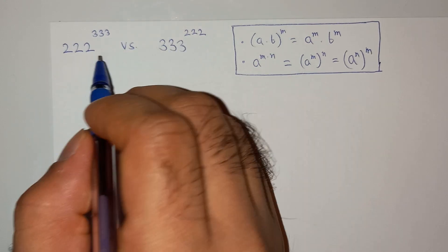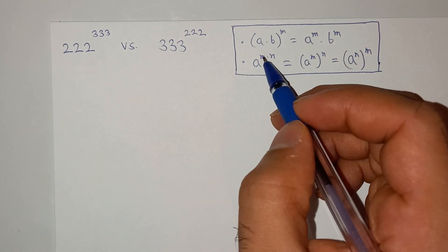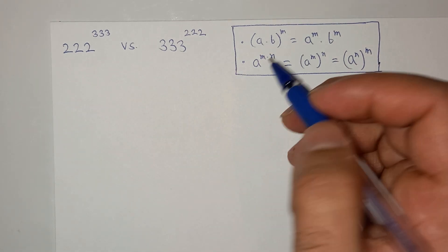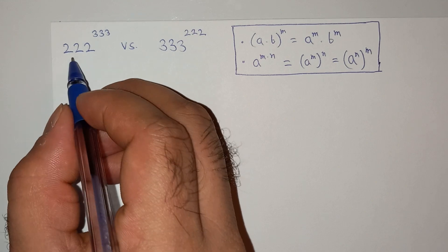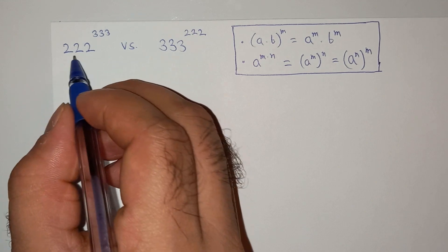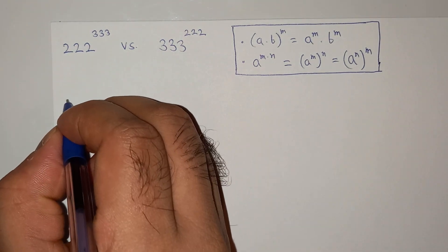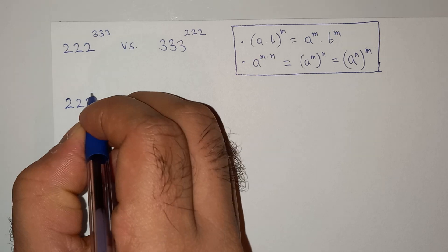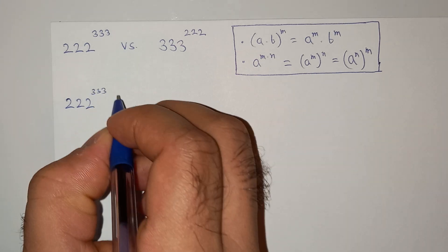So while solving this question, I'm going to use these two exponential rules. So let's try to solve this first term, which is triple 2 power triple 3.